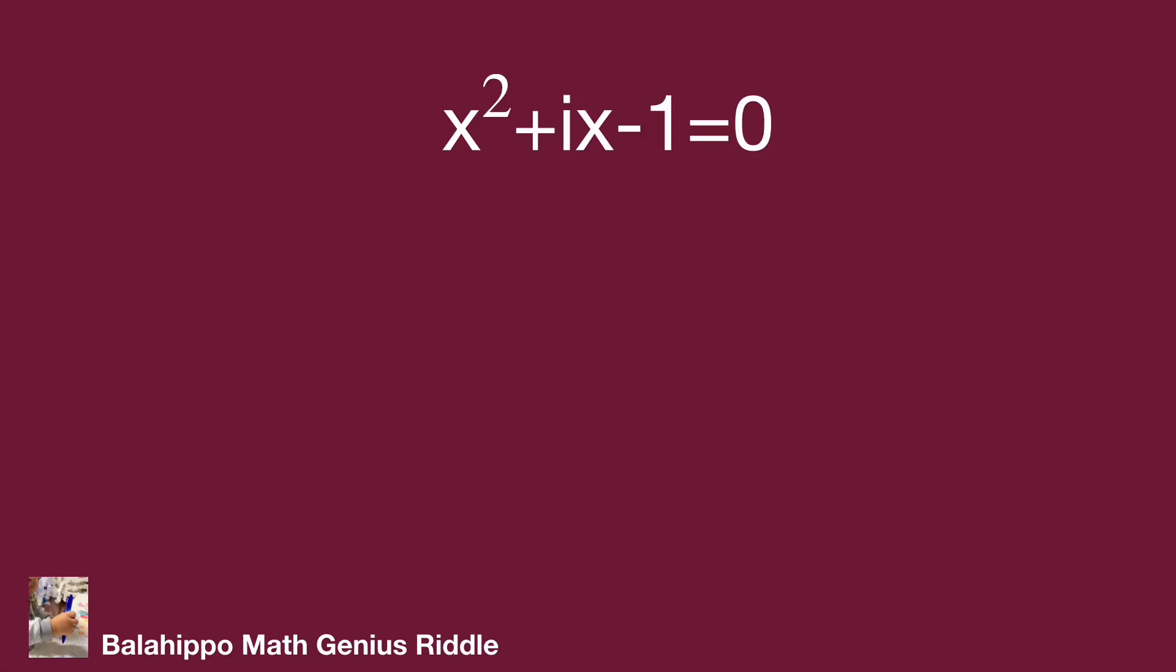We use the quadratic formula to get x from ax² + bx + c equals 0: x equals minus b plus or minus square root of b² - 4ac over 2a. Apply the formula.